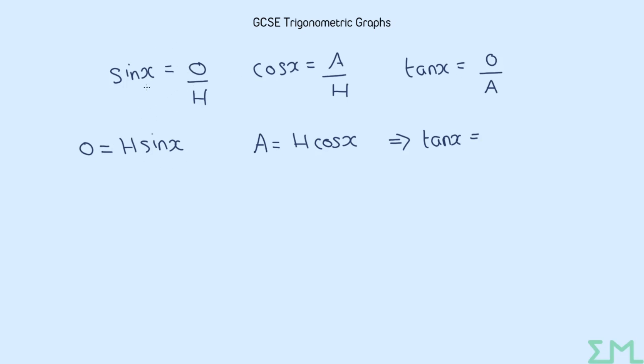now if I replace the O with the equation from the beginning here, this is just SOHCAHTOA. So H sin x, and then adjacent A, we've rearranged this equation to get H cos x to go in place of A. Because we have a fraction here, a division, we can simply cancel the two H's and we get the identity that I have already mentioned.